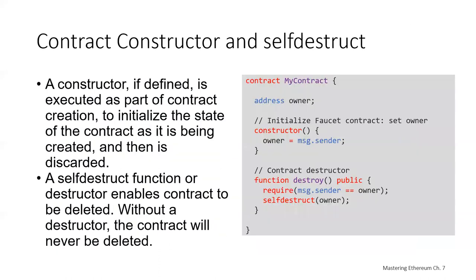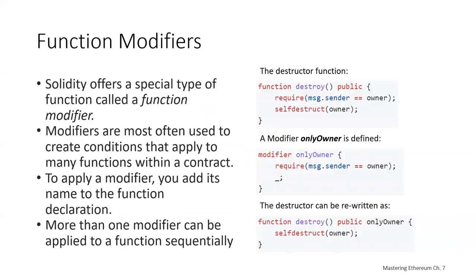This shows how we could add the destructor and constructor to our faucet example that we had shown previously.